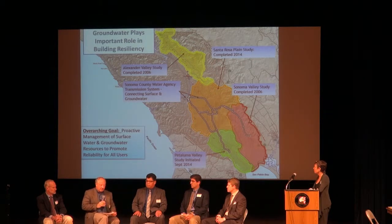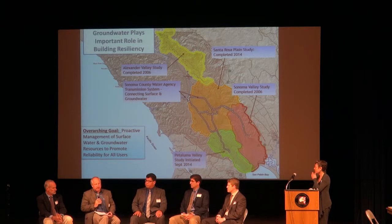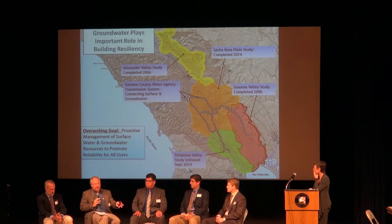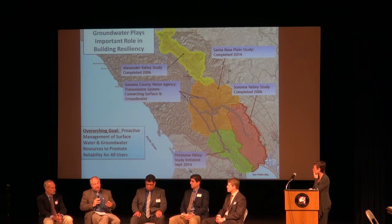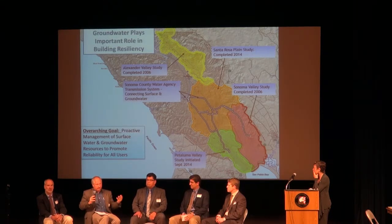In terms of integrated regional water management plans, our service area covers two plans that are very distinct. One is the Bay Area — very urbanized. The other is the North Coast, which goes from Sonoma County all the way up to the Oregon border — very rural, resource-oriented, and culturally very distinct. Siskiyou County and Sonoma County have a lot of political and cultural differences, and there have been a lot of challenges in bringing folks together and learning about each other.